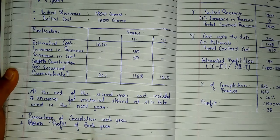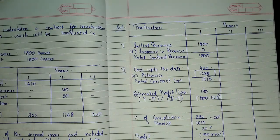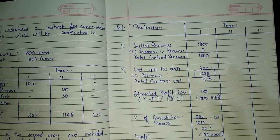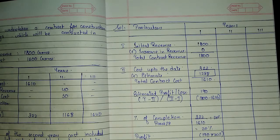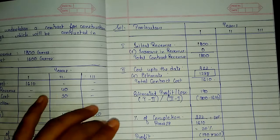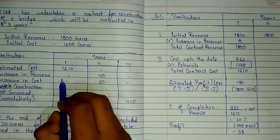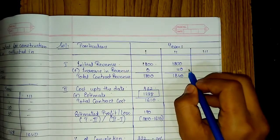Now for Year 2. AS5 states that if there is an increase in revenue, such revenue is taken as the initial revenue from the next year. So for Year 2 there is an increase of 40 crores, added to 1800 crores, giving 1840 crores as initial revenue for Year 3. Year 2 initial revenue is 1800 crores plus increase of 40 crores, totalling 1840 crores.